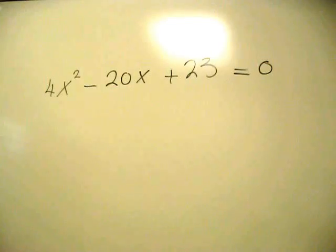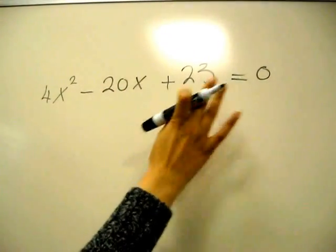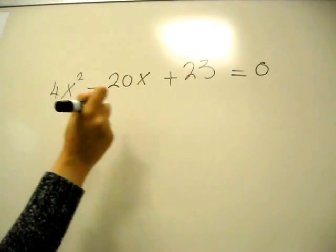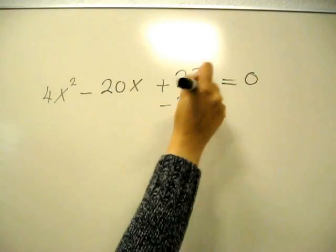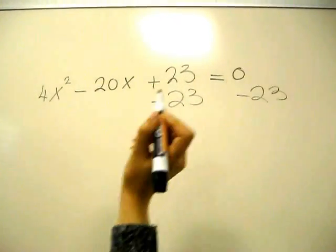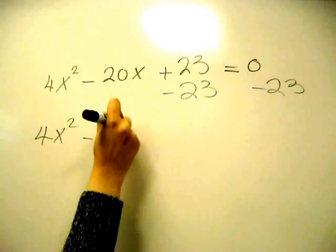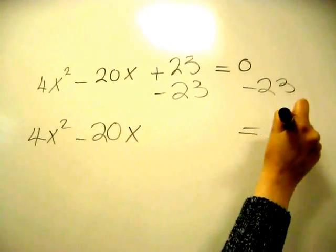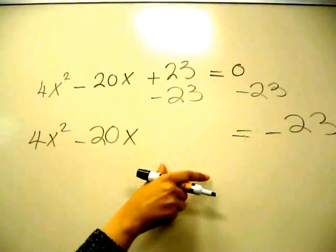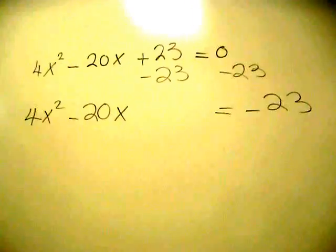We're going to move the constant to the other side of the equal sign. So I'll subtract 23 from each side. This is my first step. I'm left with 4x² - 20x = -23, and I'm leaving a space so I can put my perfect square in there.